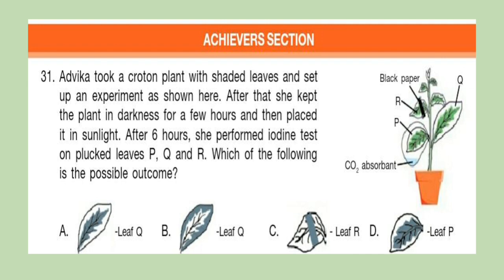Question 31: Adwika took a croton plant with shaded leaves and set up an experiment as shown here. After that she kept the plant in darkness for a few hours and then placed it in sunlight. After six hours she performed iodine test on plucked leaves P, Q and R. Which of the following is the possible outcome? Think about your answer.